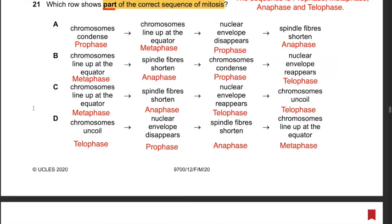Question 21: Which row shows part of the correct sequence of mitosis? The correct sequence is prophase, metaphase, anaphase, telophase. The answer is C, as all other answers do not follow the correct sequence. In C: chromosomes line up at the equator (metaphase); spindle fibers shorten (anaphase); nuclear envelope reappears (telophase); chromosomes uncoil (telophase - there can be early and late telophase). Hence they form the correct sequence and the answer is C.